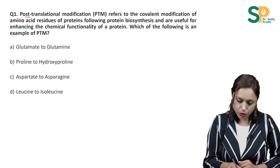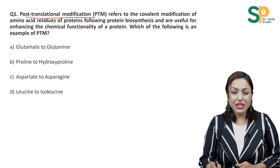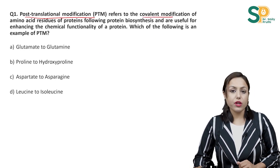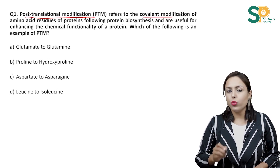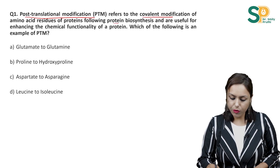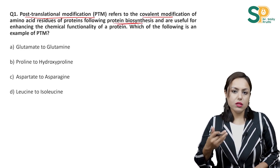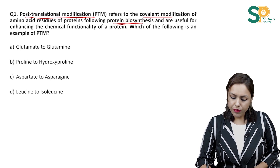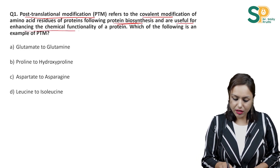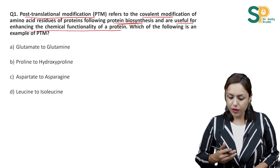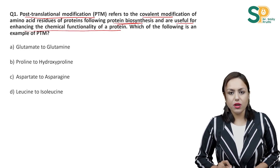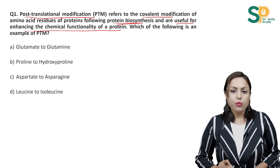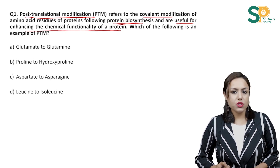Question number 1: Post-translational modification (PTM) refers to covalent modification of amino acid residues of proteins following protein biosynthesis. After protein biosynthesis, there occur post-translational modifications, which are useful for enhancing the chemical functionality of a protein. Which of the following is an example of PTM? Options are: glutamate to glutamine, proline to hydroxyproline, aspartate to asparagine, leucine to isoleucine.